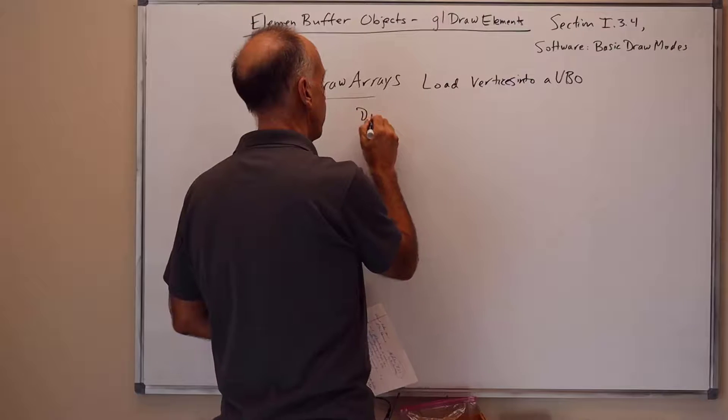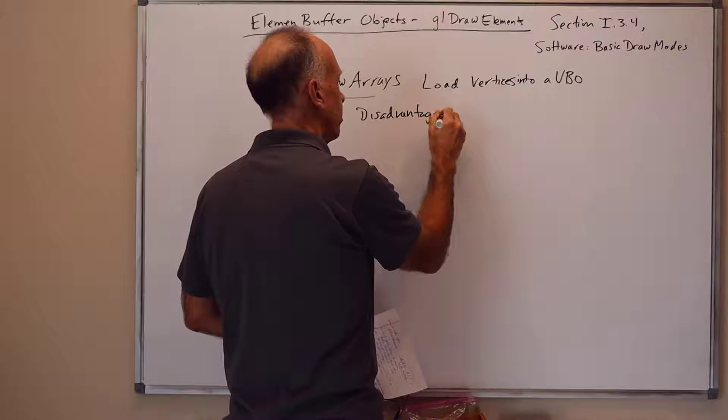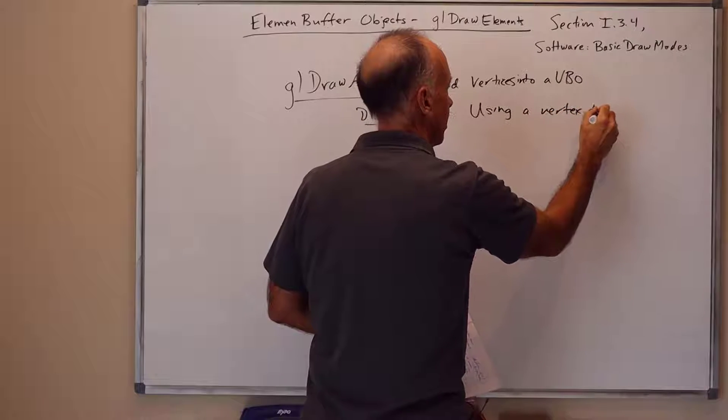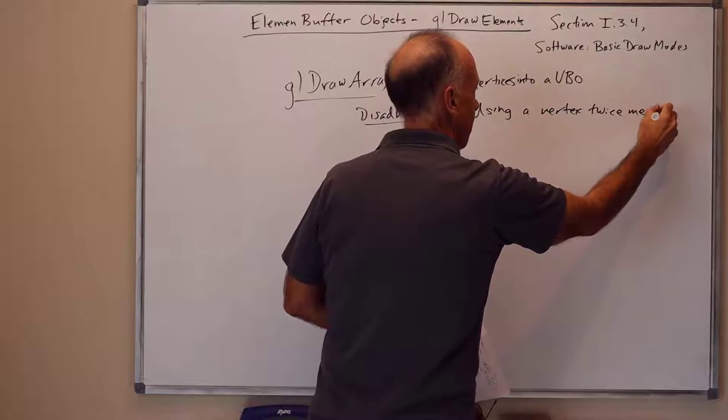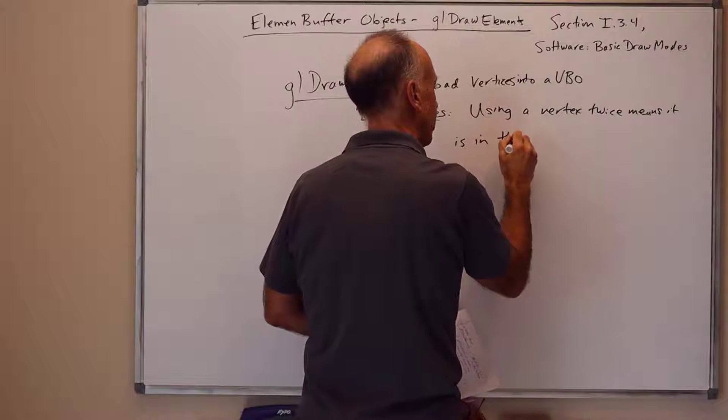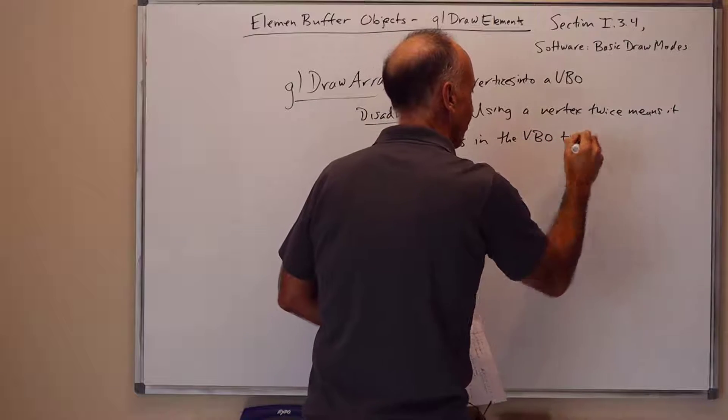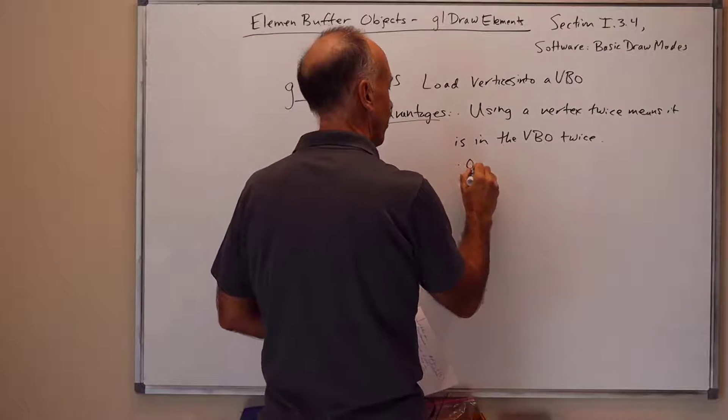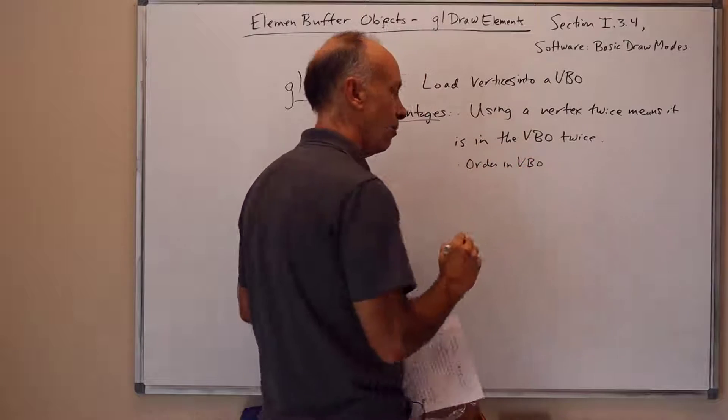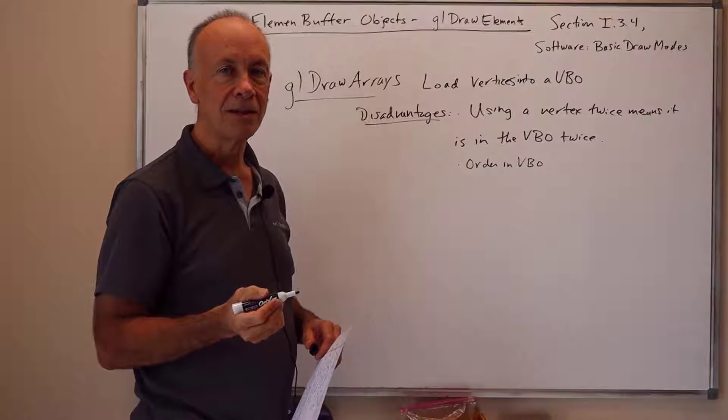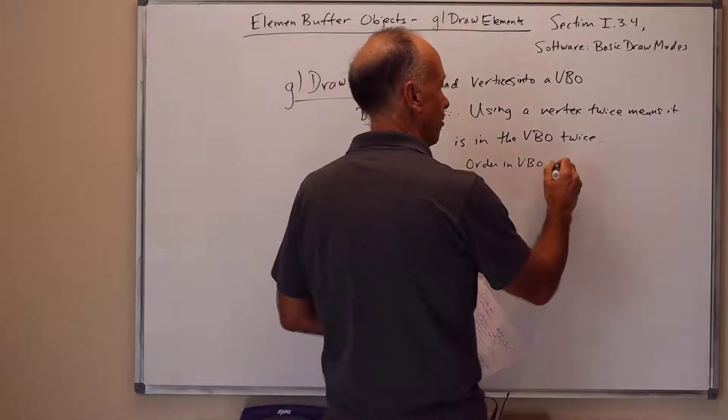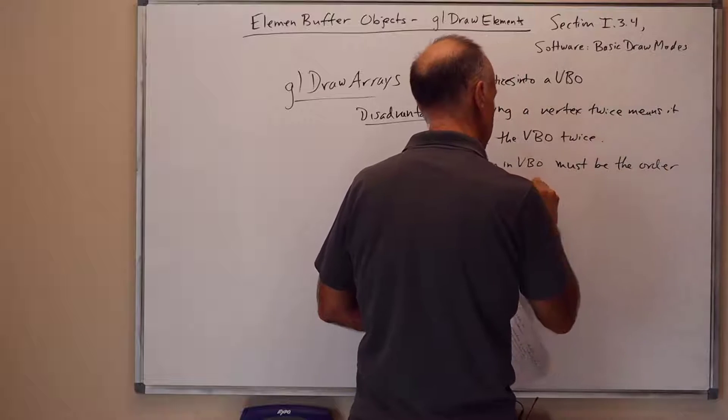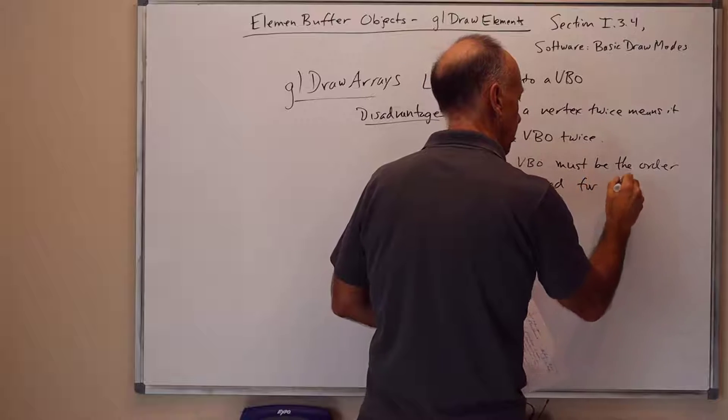Some disadvantages here were: to use a vertex twice, you have to repeat it in the VBO. Using a vertex more than two times requires putting it in the VBO more than two times. Another disadvantage is the order of the vertices in the VBO has to reflect the order that the GL_TRIANGLE_STRIP or GL_TRIANGLE_FAN wants to use them. It might not be a natural way to order the vertices. So we're restricted to putting them in the order that's needed by the function GLDrawArrays.